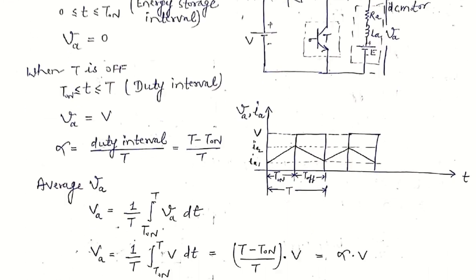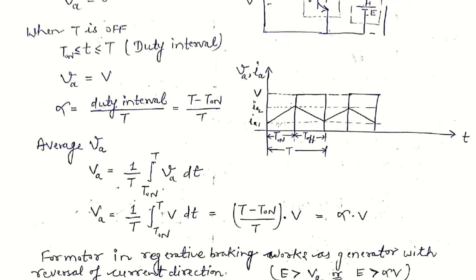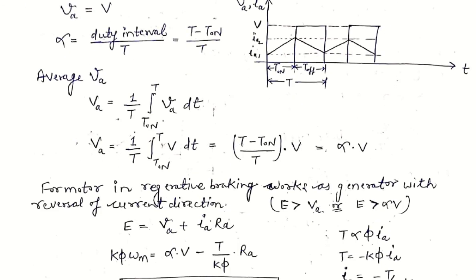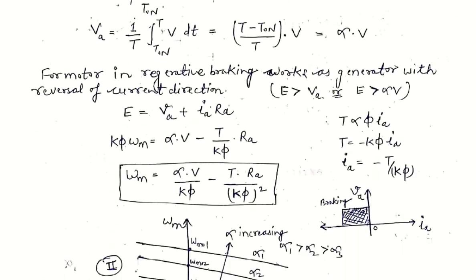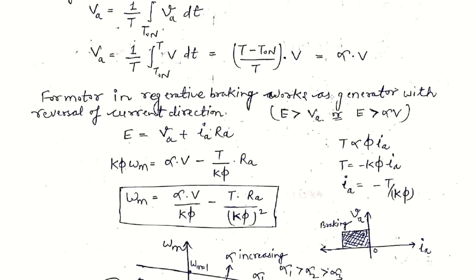To find the average voltage in regenerative braking: from 0 to T_on, output is zero (short-circuited by transistor switch); from T_on to T, output equals V (diode forward biased, transistor OFF). Integrating: V_A = (1/T) ∫_{T_on}^{T} V dt = (T − T_on)/T · V = (T_off/T) · V = α·V. In regenerative braking, the motor acts as a generator, supplying power to the input side with reversal of armature current. This occurs when E > V_A, i.e., E > α·V. The speed-torque expression is: E = V_A + I_A·R_A (generator convention), with V_A = α·V and I_A = −T/(k·φ) (negative because armature current is reversed).